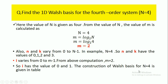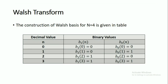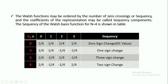The construction of the Walsh basis for N=4 is given in this table. The n values vary from 0 to 3. When n=0, the binary representation is 00; when n=1, it is 01; when n=2, it is 10; and when n=3, it is 11. These are the binary values representing the decimal values from 0 to 3.